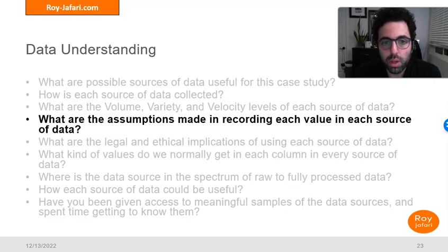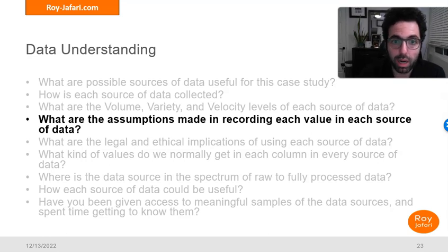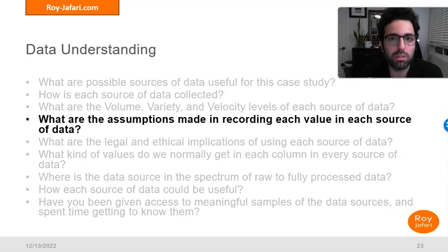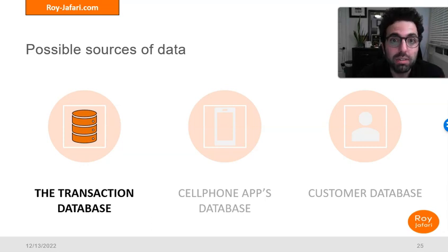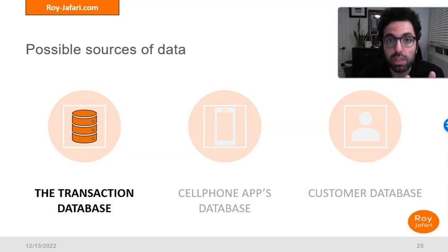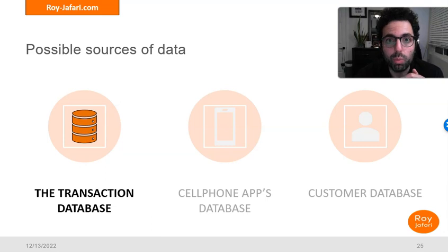The fourth question is: what are the assumptions made in recording each value in each source of data? There are a lot of things that are assumed. If we've answered the second question about collection procedures, we can start having some ideas about this question. With the transaction data, a big assumption is that every transaction in our database is coming from a legitimate requester — that the point-of-sale they're using is verified as correct. That might not always be the case.